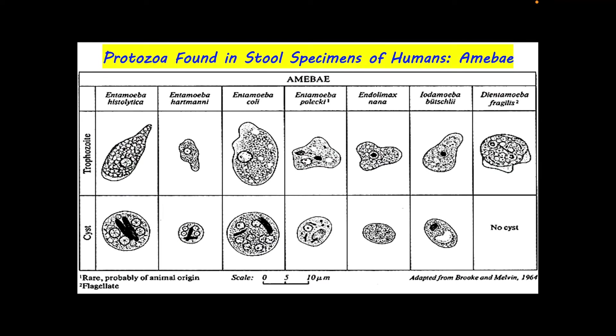This illustration shows protozoans found in stool specimens of humans — all of them are Sarcodina or amoeba. It's not only enough to know how they look, but we must examine their morphology more closely: the number of nuclei, presence of chromatin, location of karyosome, and anything that might distinguish one amoeba species from another. They almost look the same, so careful microscopic examination is required.